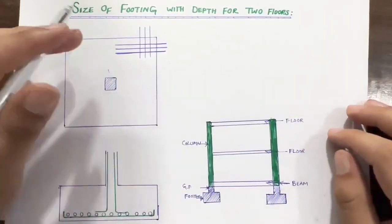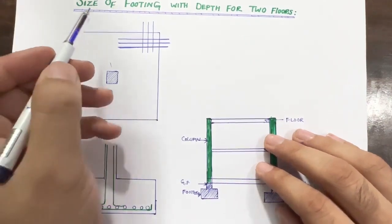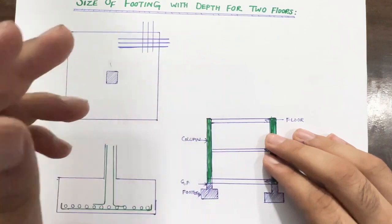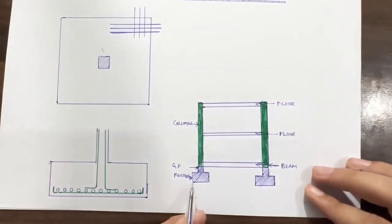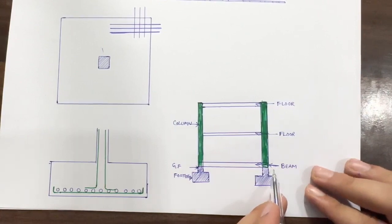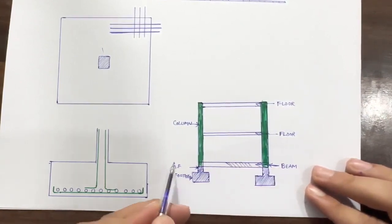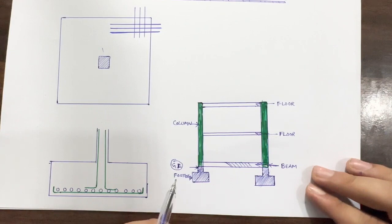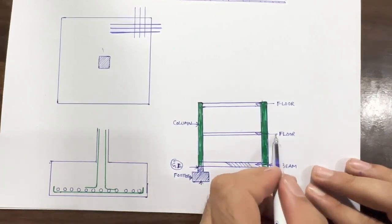Hello guys, welcome back to Several Engineers' YouTube channel. Today in this short video lecture I will guide you for the size of footing with depth for a two-floor residential building. As you can see in this diagram, this is the footing for a two-floor building. You can see this is the plinth beam on top of the footing, because this is ground level (GL), and these are the two footings shown in section.